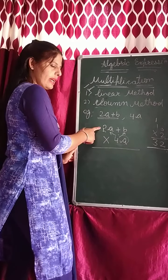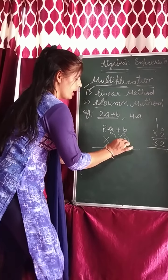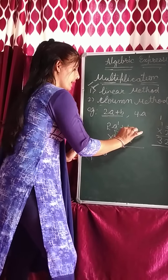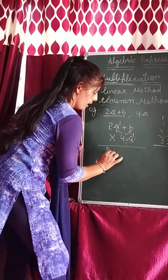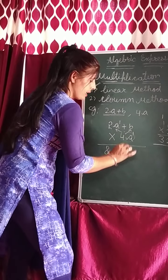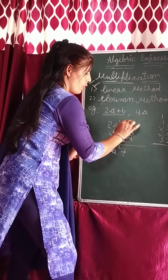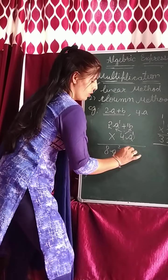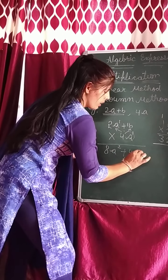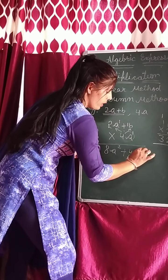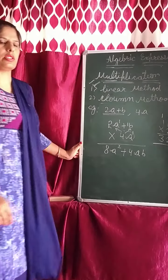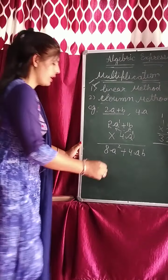So: 4 times 2 is 8, A multiplied with A gives A squared — A power 2. Then plus sign. 4 times 1 is 4, A as it is, and B as it is — since A and B are different variables, you write them separately. So this was the column method solution.